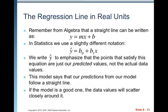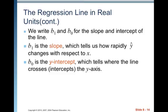We write Y hat to emphasize that the points that satisfy this equation are just our predicted values, not the actual values. This model says that our predictions from our model follow a line. If the model is a good one, the data values will scatter closely around it. We write B1 and B0 for the slope and intercept of the line. B1 is the slope, which tells us how rapidly Y hat changes with respect to X on average, and B0 is the Y-intercept, which tells us where the line crosses the Y-axis.